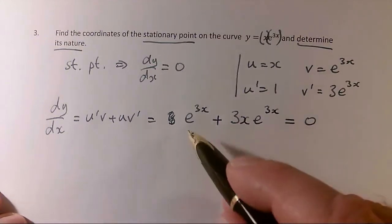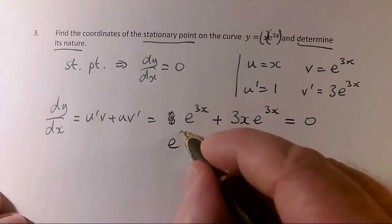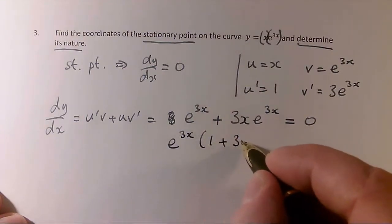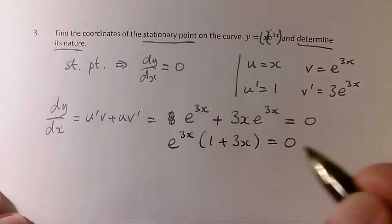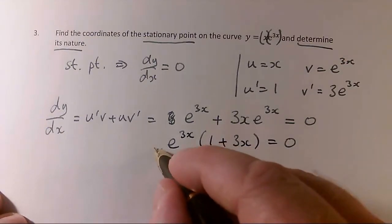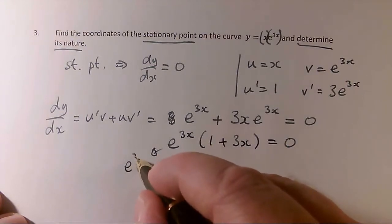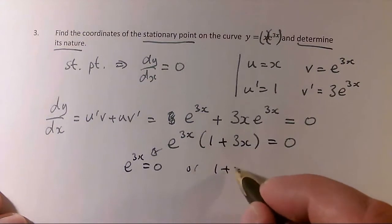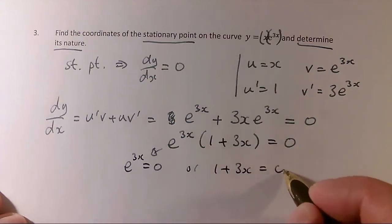And to solve this, I have to notice the common factor of e to the 3x times brackets 1 plus 3x has to equal 0. Well, a product equaling 0, first thing could equal 0, e to the 3x equals 0, or 1 plus 3x equaling 0.